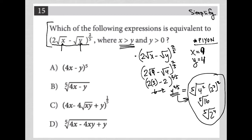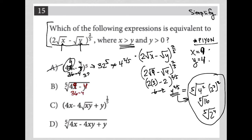Now I take those same numbers and plug them into the answer choices. For choice A, with x=9 and y=4, we get 4×9=36 minus 4, which is 32, making this 32 to the 5th power — in no way equal to 4 to the 2/5 — so A is gone. For choice B, again 36 minus 4 is 32, giving the fifth root of 32. But we need the fifth root of 16, not 32, so B is also gone.